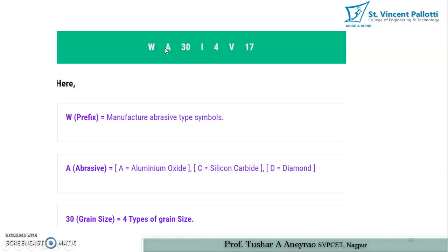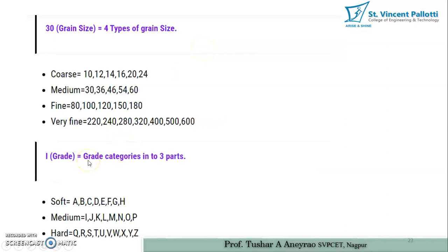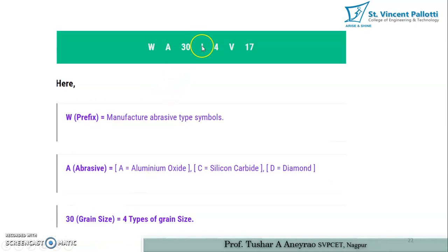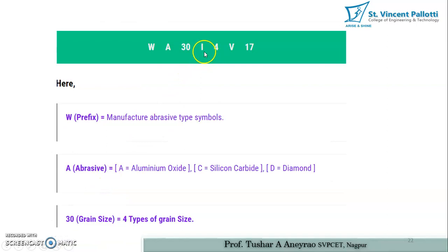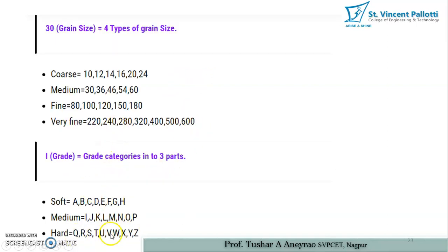Then comes I, which is the grade of the grinding wheel. Grade is categorized into three parts: soft, medium, and hard. A is the very softest grade and Z is the very hardest grade. Soft grades are from A to H, medium grades are from I to P, and hard grades are from Q to Z. So I at the fourth position means the grade is medium.